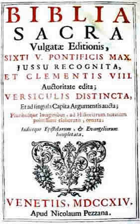The revision was based on the Hentinean edition. It was printed on 9 November 1592, with a preface written by Cardinal Bellarmine. The misprints of this edition were partly eliminated in a second 1593 and a third 1598 edition.